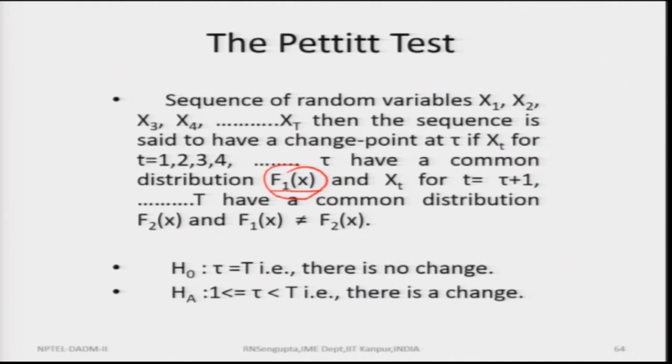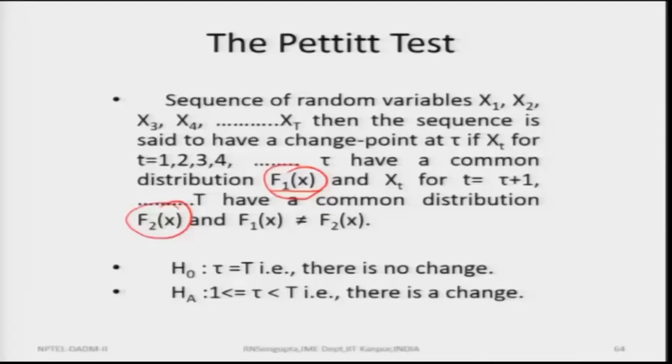We set up the Pettitt test as a hypothesis test: H-naught is that tau equals T, meaning there is no change in the time period considered. If H-naught is ratified we accept no change; if H-A is accepted (H-naught is rejected) we identify the point tau as the change point. There can be multiple change points: tau-1, tau-2, tau-3, ..., tau-k, and we can find them all using the Pettitt test.